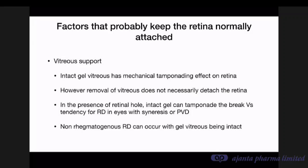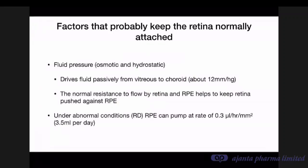Non-regmatogenous retinal detachment can occur even when the gel vitreous is still intact and adherent to the retina, telling us that vitreous attachment is just one of the factors. People who do scleral buckling also realize that in the presence of an intact gel vitreous, a buckle works better. Fluid pressure — both osmotic and hydrostatic — is another important factor, driving fluid passively from the vitreous to the choroid at about 12 mmHg.